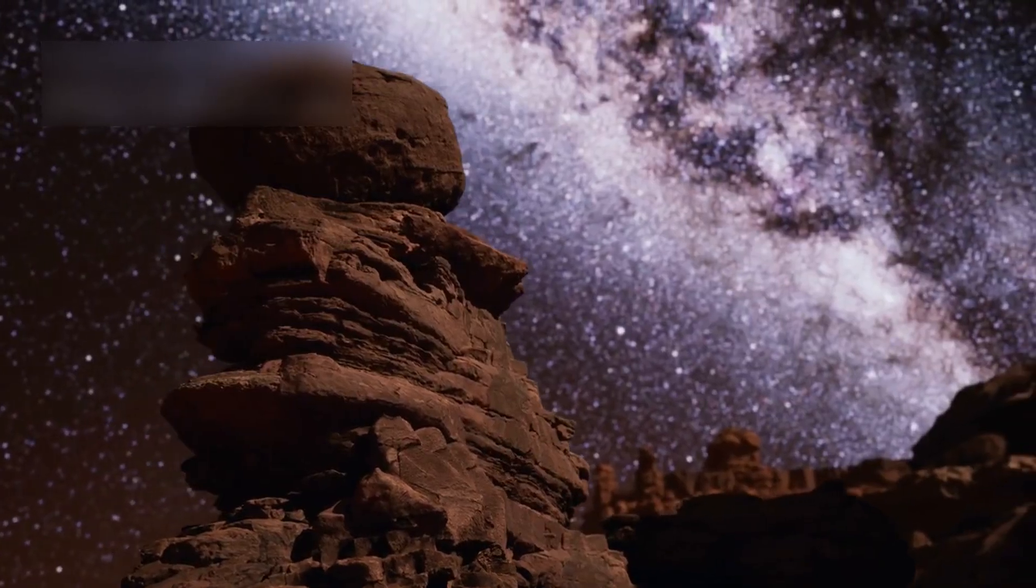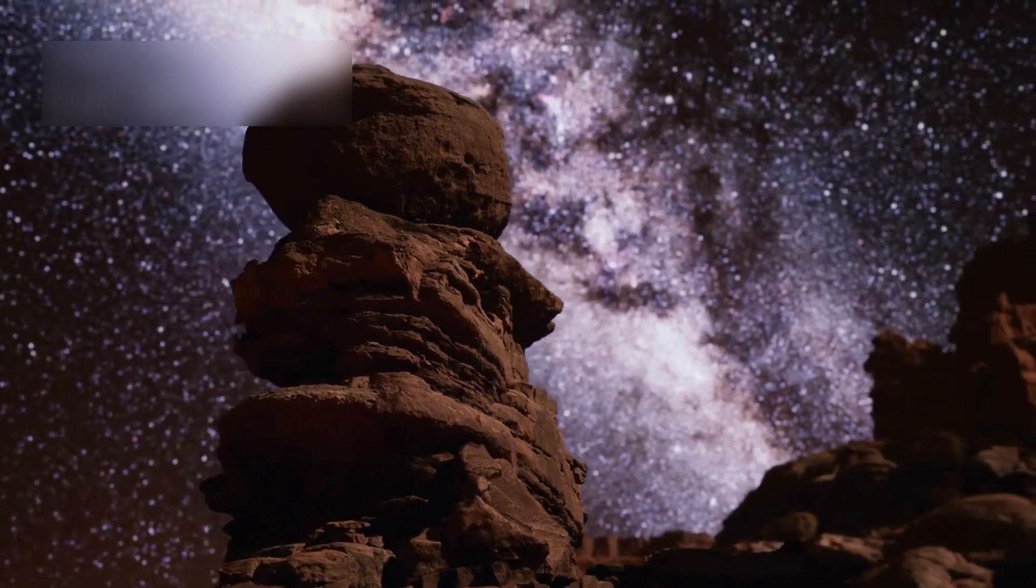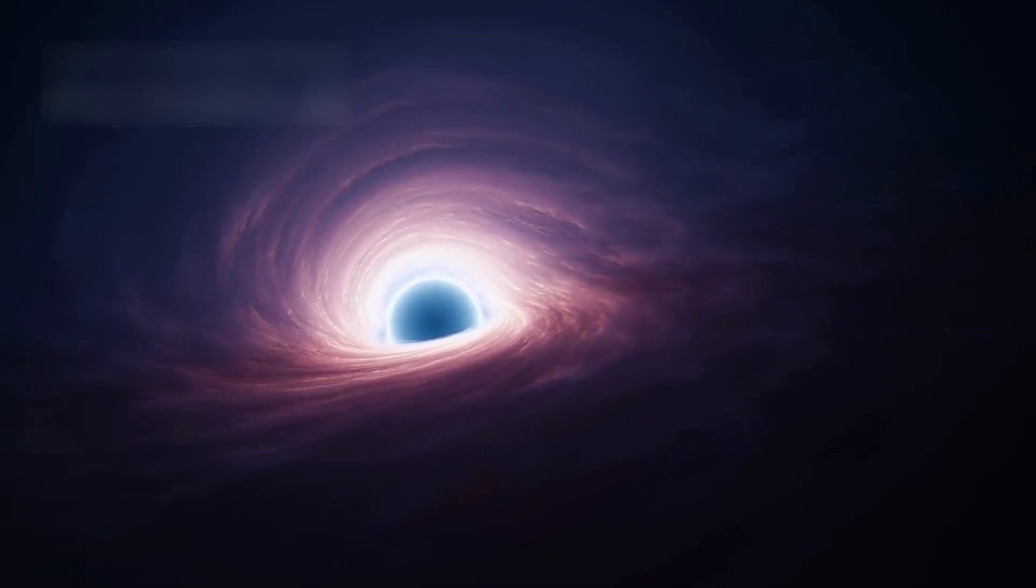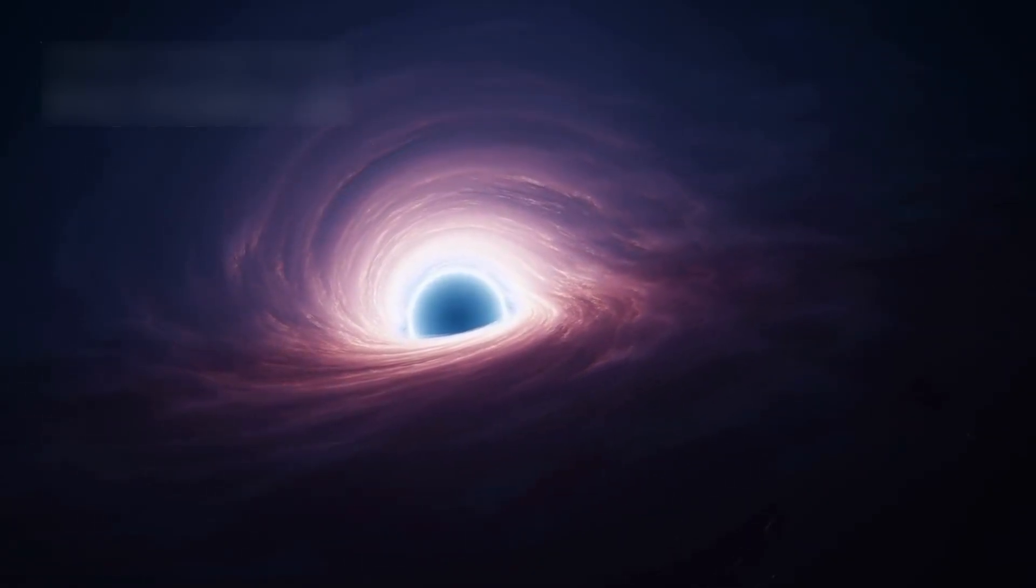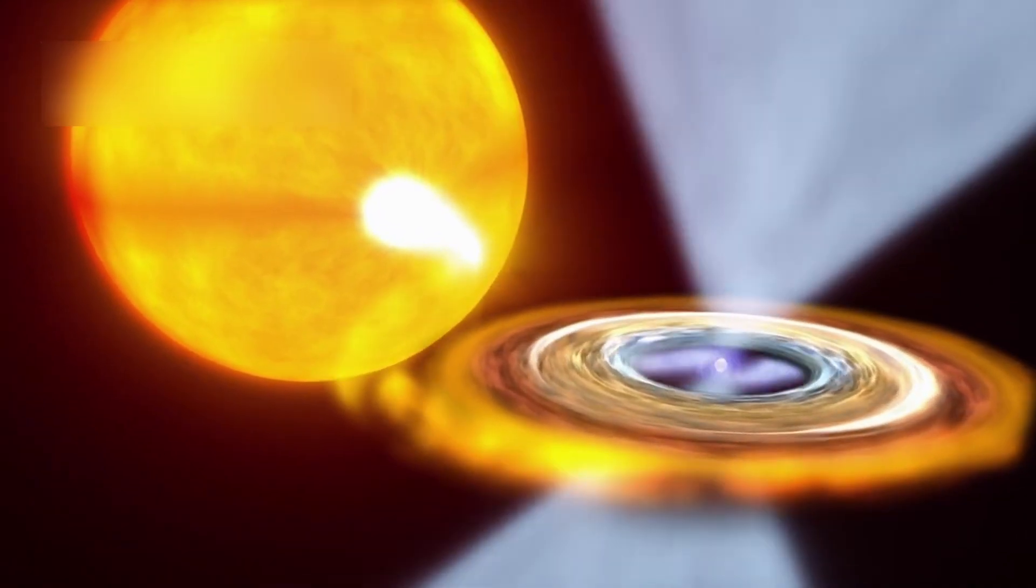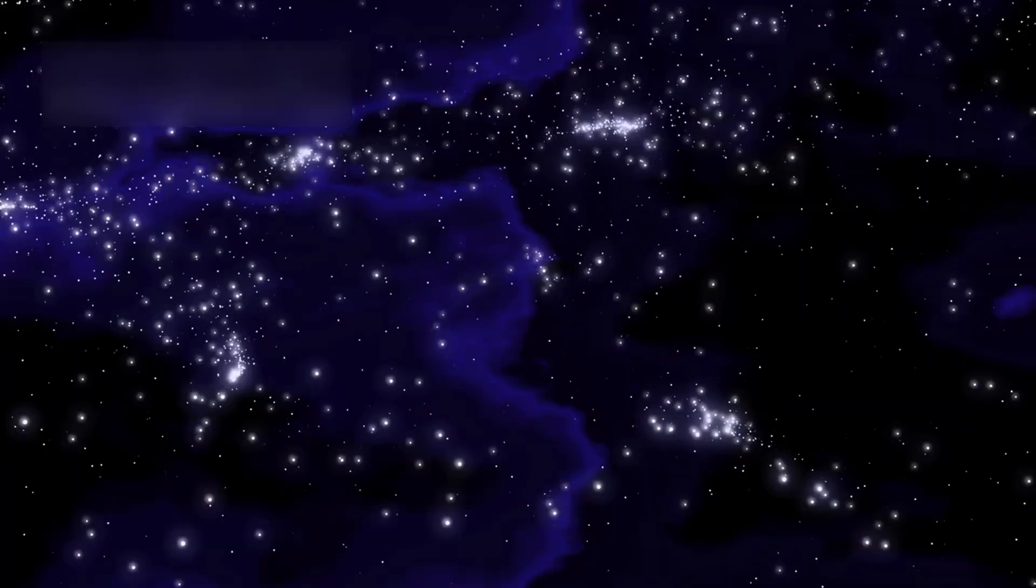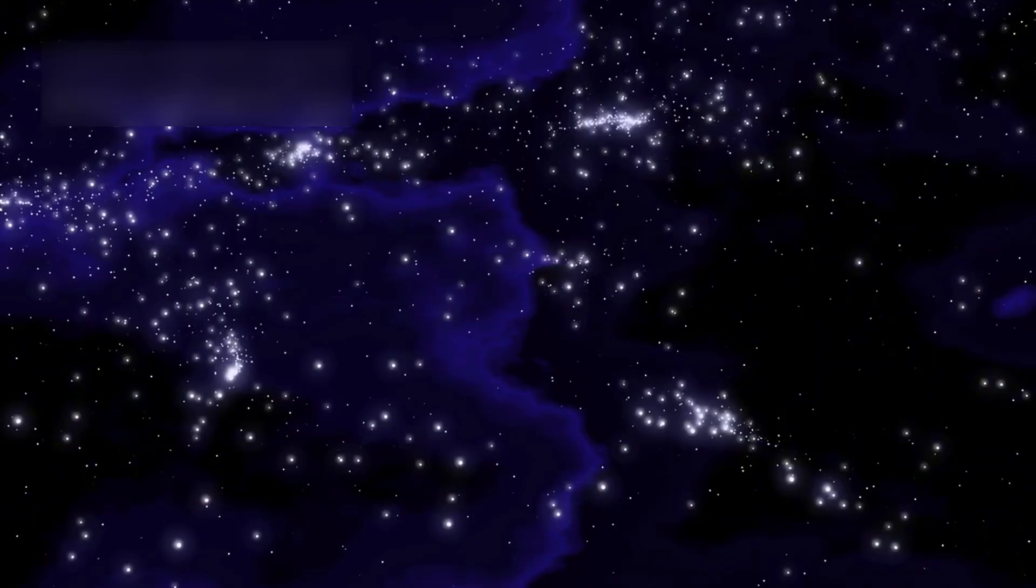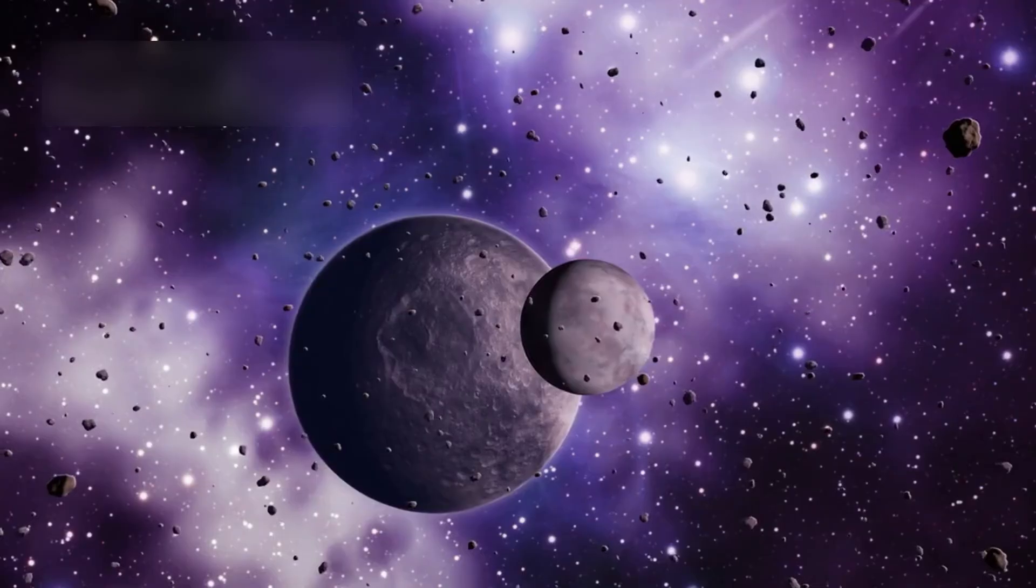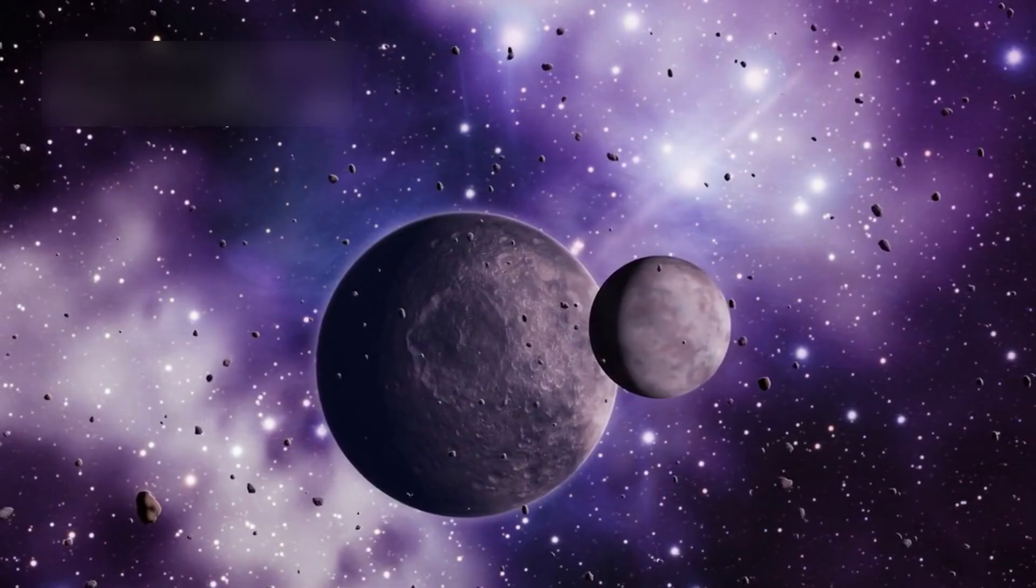At 640 light-years away, we're at a safe distance, close enough for a front-row seat from the hills. After the blast, what's left could become a neutron star or even a black hole. If the core's small, it becomes a neutron star, so dense a teaspoon weighs more than mountain ranges. But if it's heavier, it turns into a black hole, swallowing light like a cave beneath the stars.